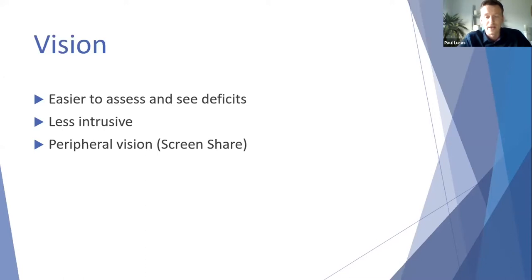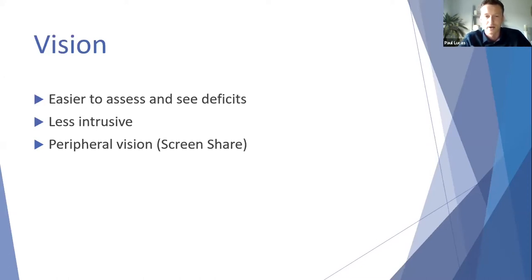For peripheral vision post-stroke, a colleague — an OT — mentioned screen sharing a picture of a landscape and having the patient focus on the center while paying attention to their peripheral vision, which is a really good idea. In terms of outcome measures, the first few on the list can be done with the camera static, ensuring balance is appropriate. For the six-minute walk, I've often asked patients to measure how far they can walk and feed that back in the next tele-rehab session.